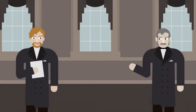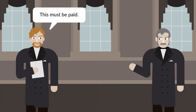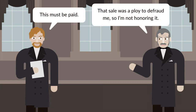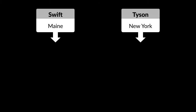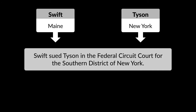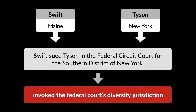But Norton and Keith never actually owned the land they claimed to sell to Tyson. The sale was a ploy to defraud Tyson. So when Swift presented the bill of exchange for payment, Tyson refused to honor it. Since Swift resided in Maine and Tyson lived in New York, Swift sued Tyson in the Federal Circuit Court for the Southern District of New York, invoking the federal court's diversity jurisdiction.